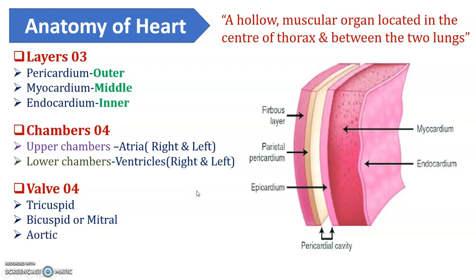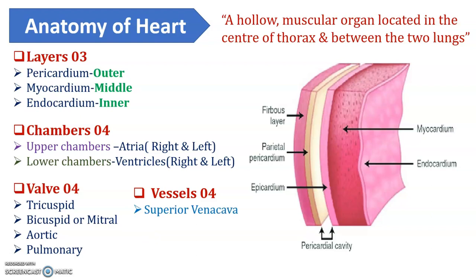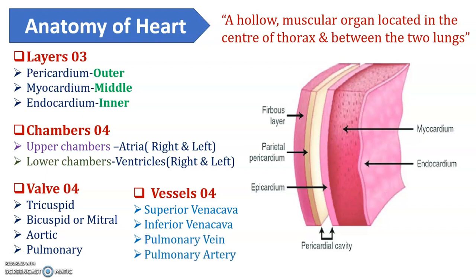The walls of the heart include the bicuspid (also called the mitral valve), tricuspid, aortic, and pulmonary valves. The vessels present in the structure of the heart include the superior and inferior vena cava, pulmonary arteries, and pulmonary veins. This is the anatomy of the heart — please pause this video and write these points in your notebook.